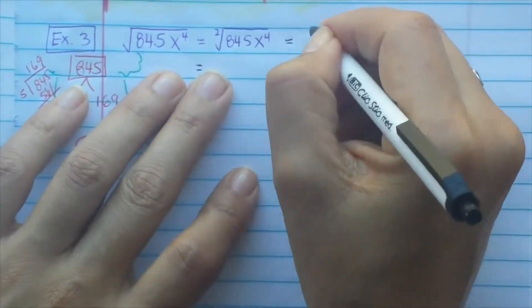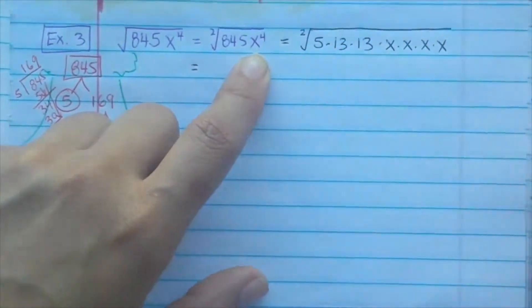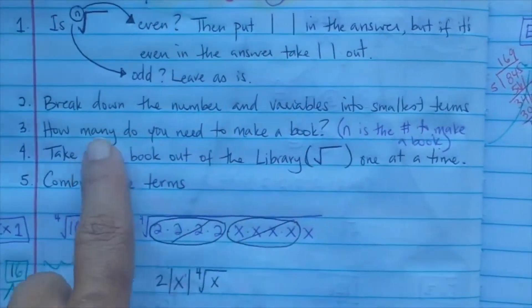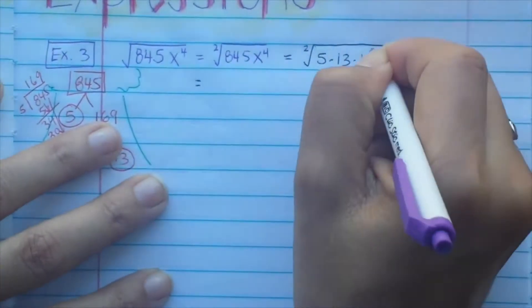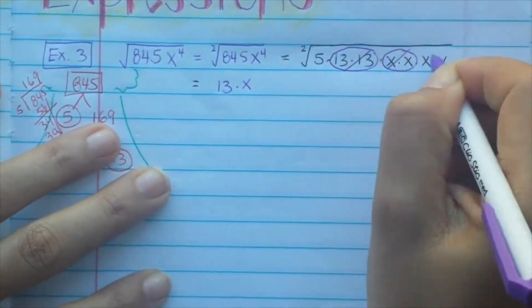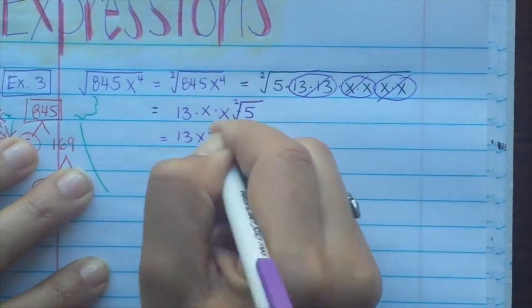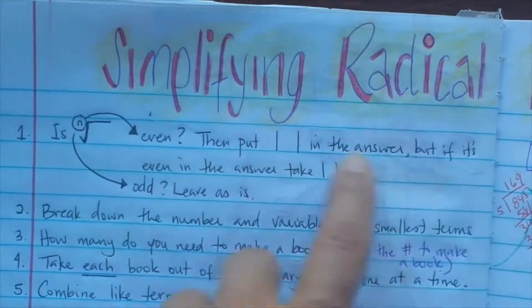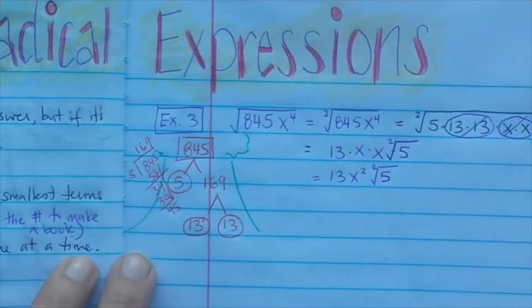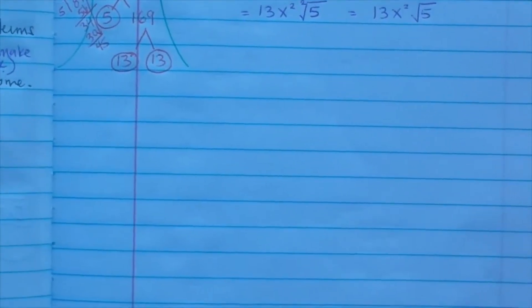So rewrite it as 5 times 13 times 13, and x^4 as four x's. We need books of 2: circle the two 13's — one 13 goes outside. Then circle two x's — one x outside, another x outside. What's left inside? Just the 5. Combining outside terms: 13x^2 times the square root of 5. Since n was even and x^2 is even outside, you don't need absolute value. The answer is 13x^2√5.